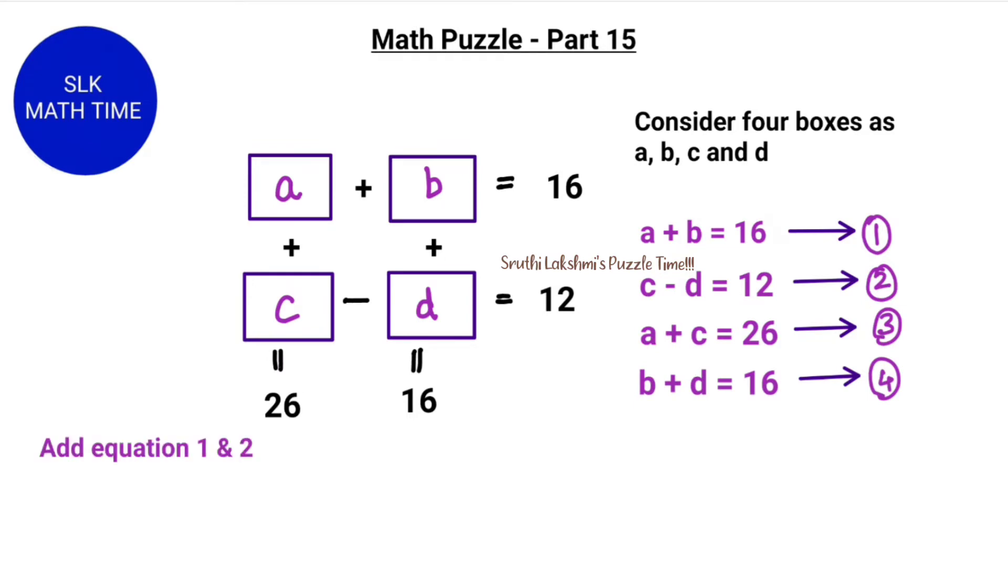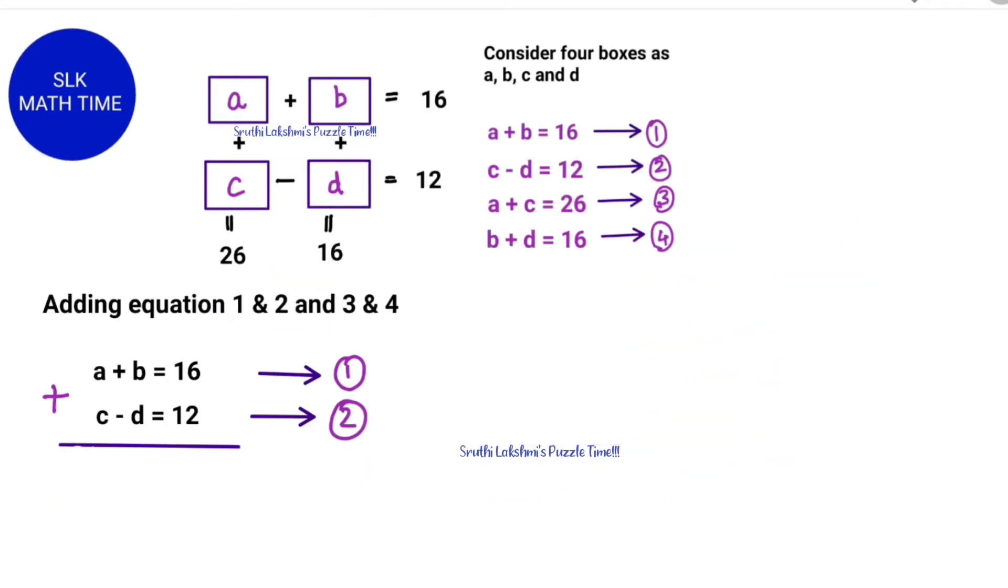So now let's add equation 1 and 2. A plus B plus C minus D equals 28. This equation is equation number 5.